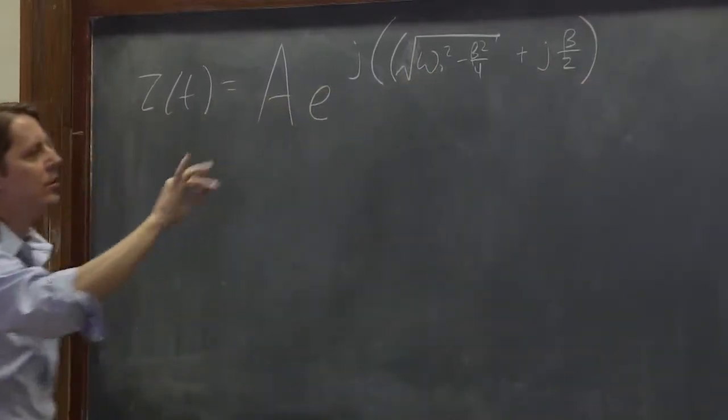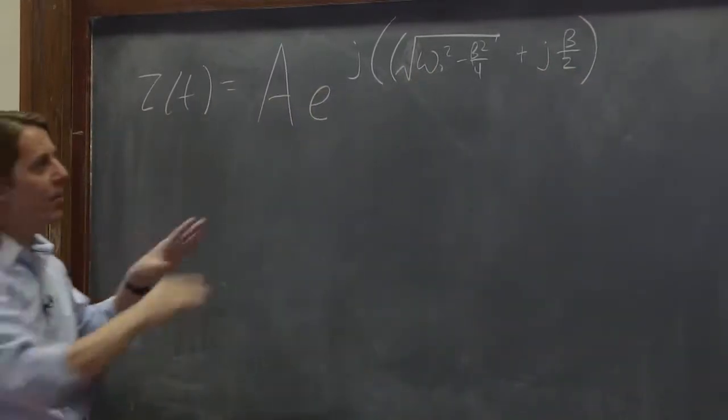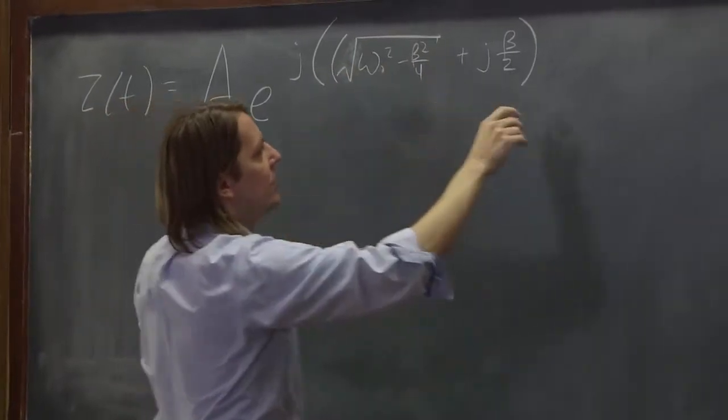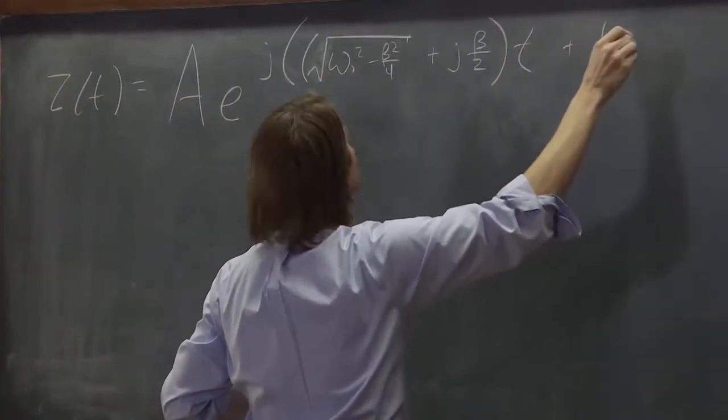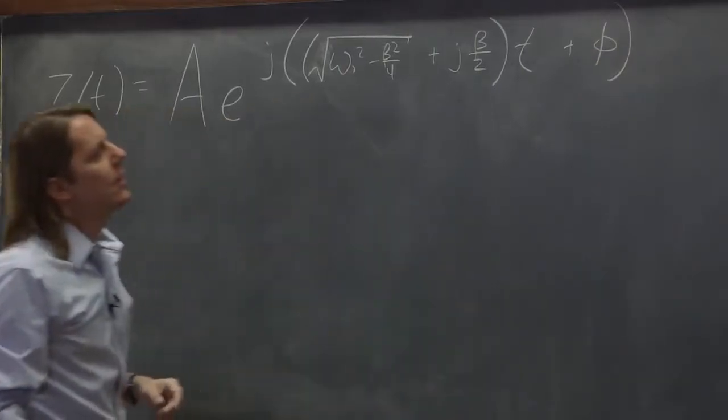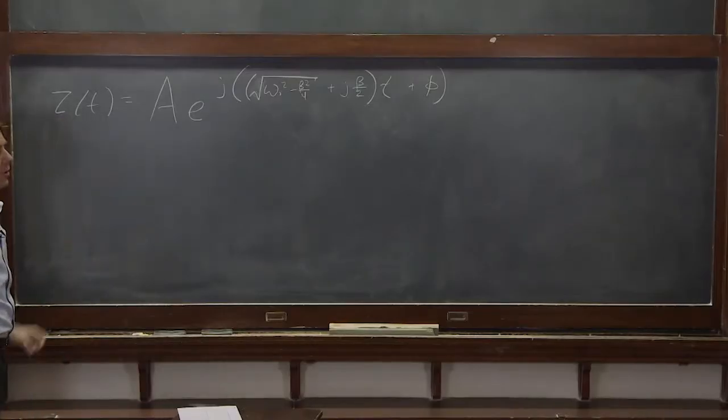And then it had an imaginary part plus J times beta over 2. So there is our imaginary frequency now filled in with actual parameters of the oscillator, T plus phi. That was our answer.